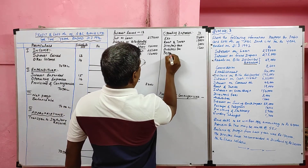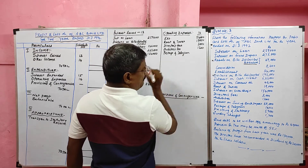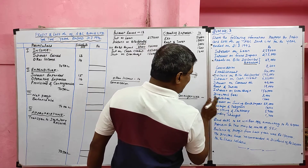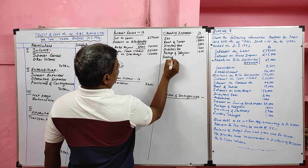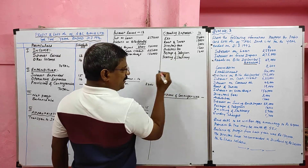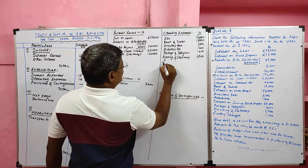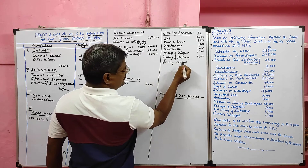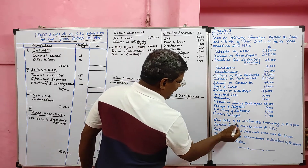Postage and telegram is included in operating expenses with a value of rupees 1,400. Printing and stationery is also an operating expense with a value of rupees 2,900.